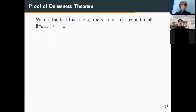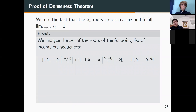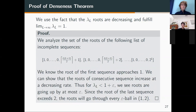For the proof, we use the fact that the lambda_L roots are decreasing and approach 1. For any L, the first sequence on our list is incomplete and its root approaches 1 asymptotically, while the last has a root above 2. Given any epsilon, we pick L large enough so the first sequence has root below 1 plus epsilon. We then show that any two consecutive entries on this list have roots differing by at most epsilon, with differences decreasing as we go up. This gives a list of sequences whose roots range from just above 1 to over 2 with consecutive gaps below epsilon, intersecting any epsilon-ball in (1, 2).